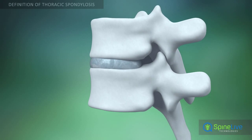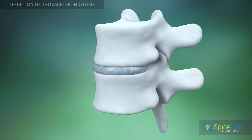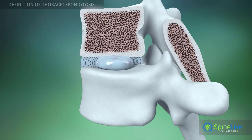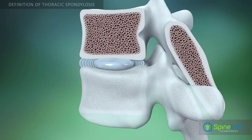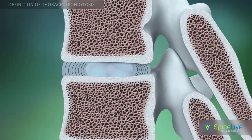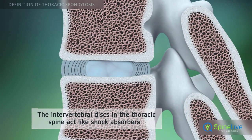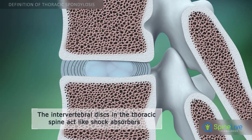The intervertebral discs between the vertebrae in the thoracic region of the spine are not as thick as those found in other spinal regions, but they act like shock absorbers.